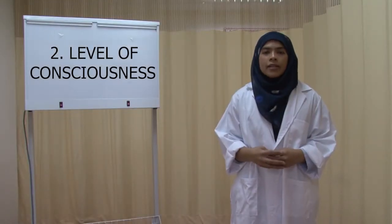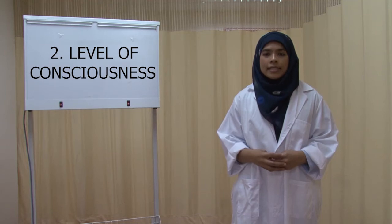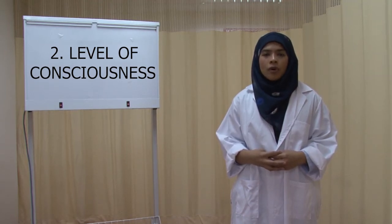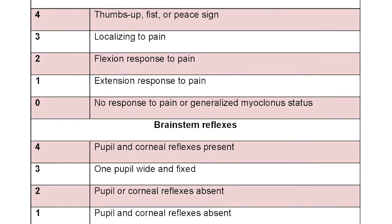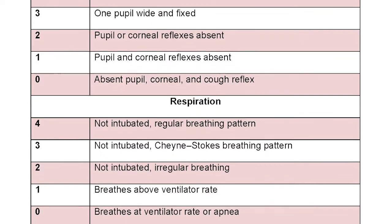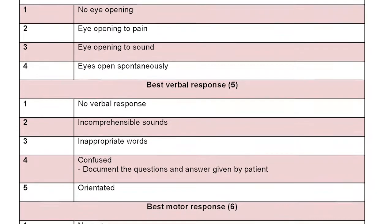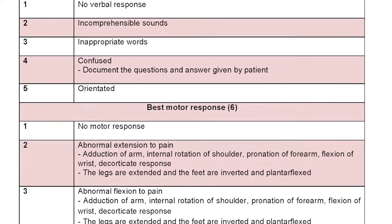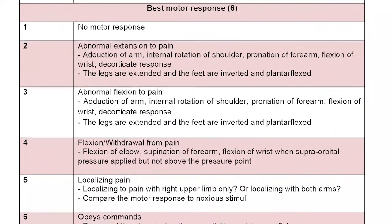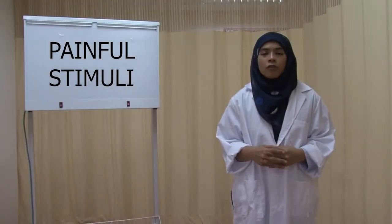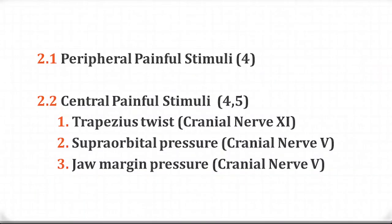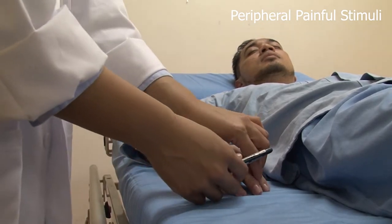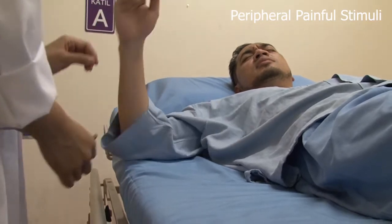For the level of consciousness, the current recommendation by the European Academy of Neurology is that the Full Outline of Unresponsiveness, or FOUR score, be used to assess the level of consciousness instead of the Glasgow Coma Scale. The examiner must document what the patient did in response to particular stimuli. Stimuli are either peripheral or central. Apply pressure with a pen or pencil to the lateral outer aspect of the proximal or distal interphalangeal joint for 10 to 15 seconds to elicit a response.